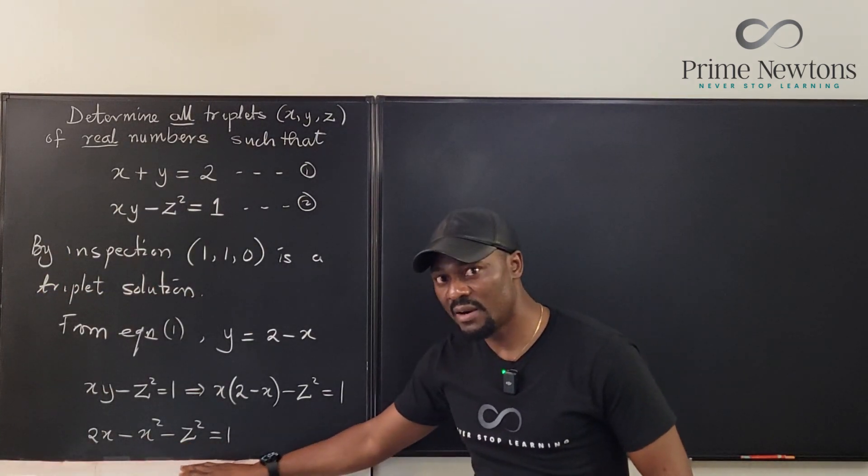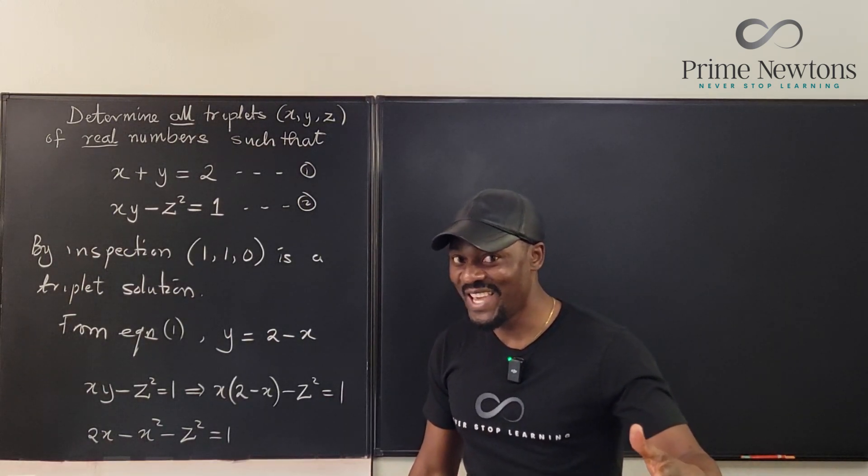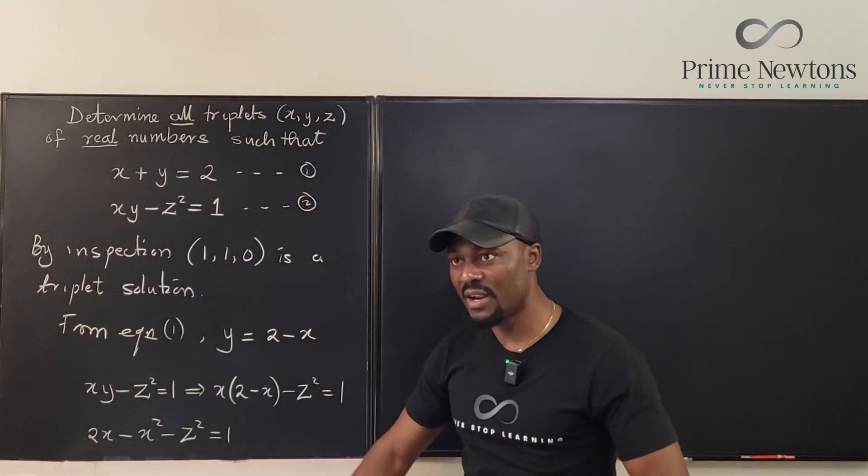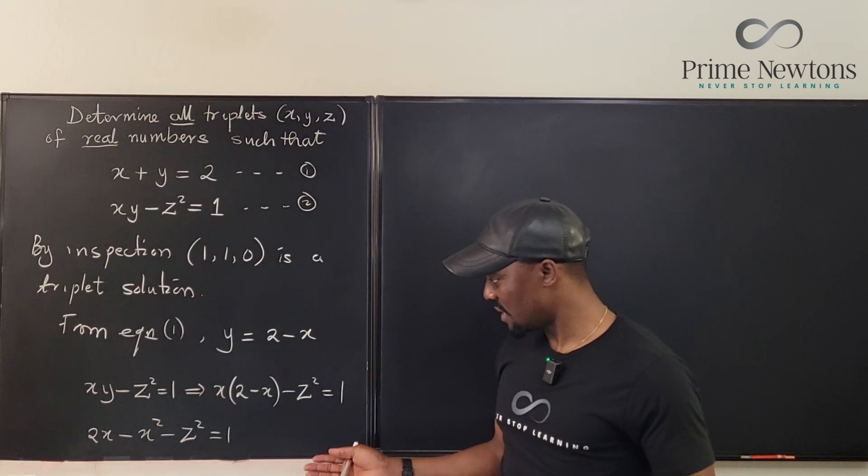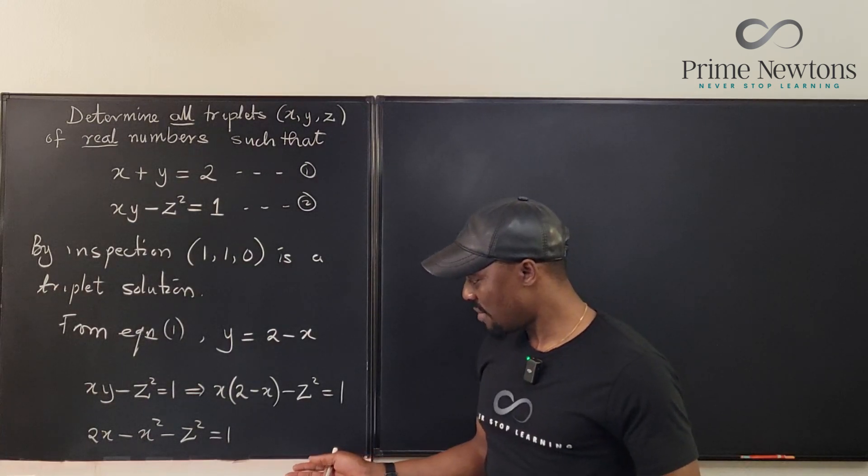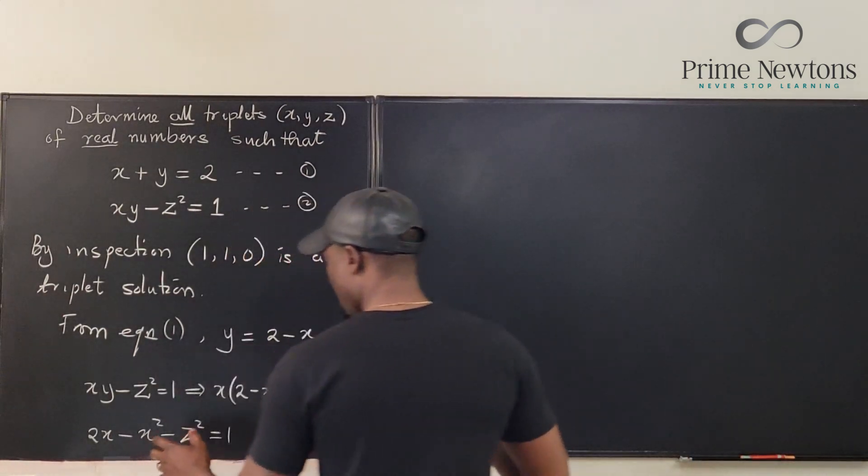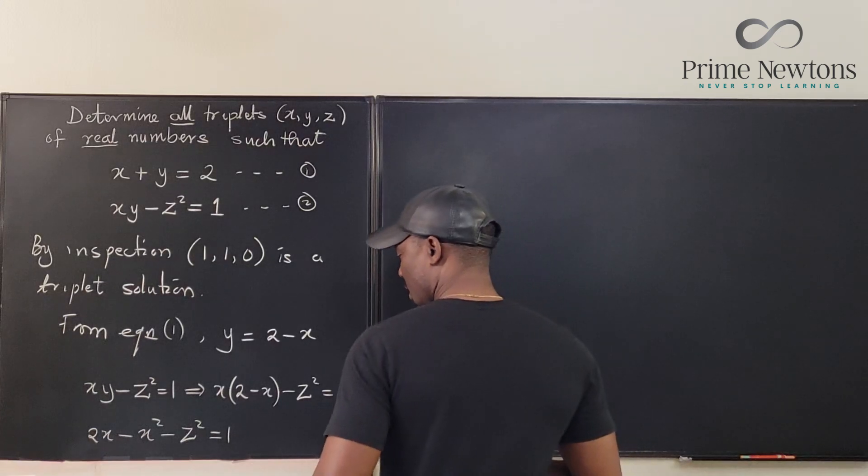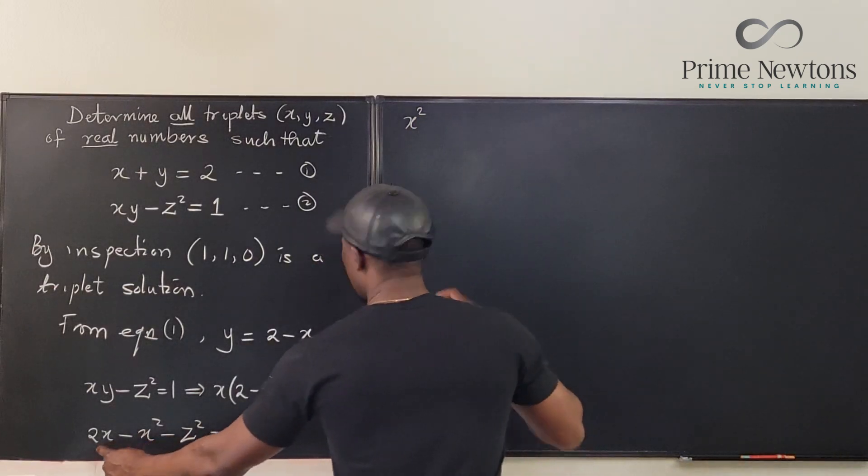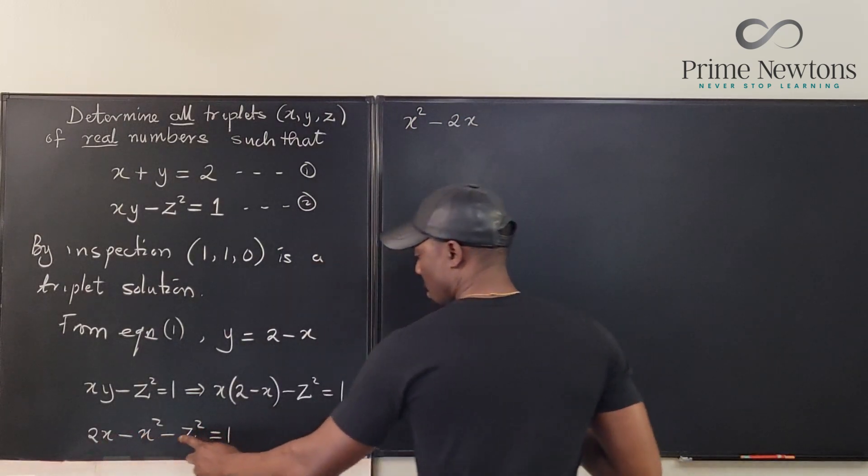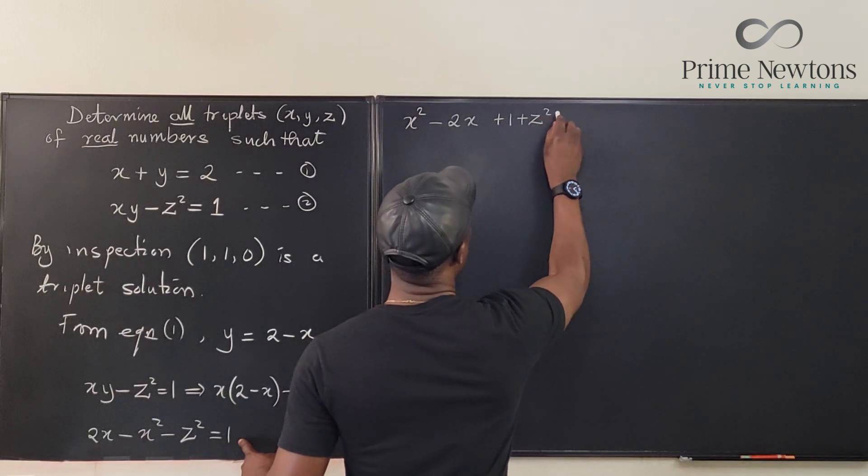Whenever you have squares somewhere and you're talking about real numbers, remember, the square of a real number must be positive. I'm going to try and create a situation where I have a bunch of squares, and I want it to be real. Maybe I should make a quadratic, because already I can see, let's solve a quadratic equation. If I move everything to one side, I'm going to have x squared minus 2x plus 1 plus z squared equals 0.